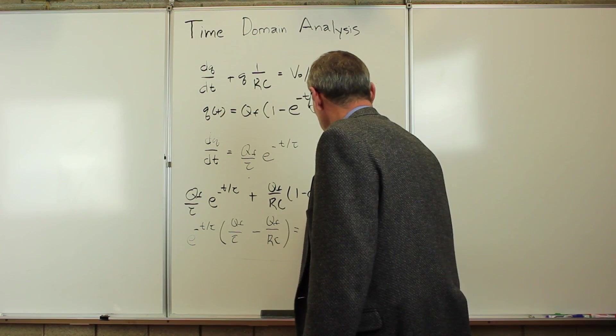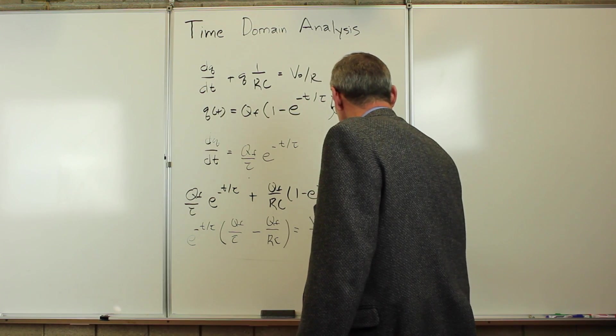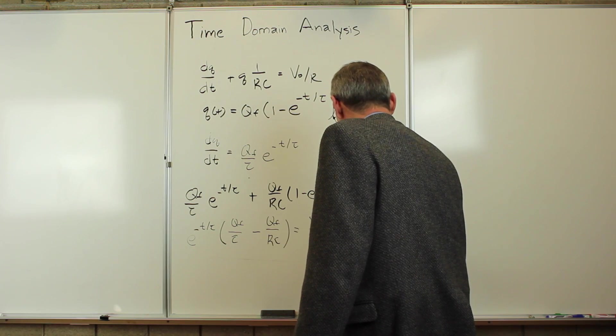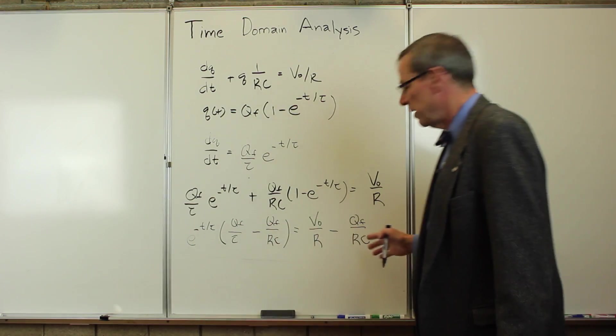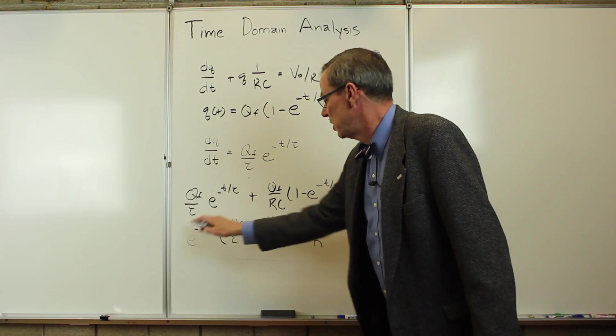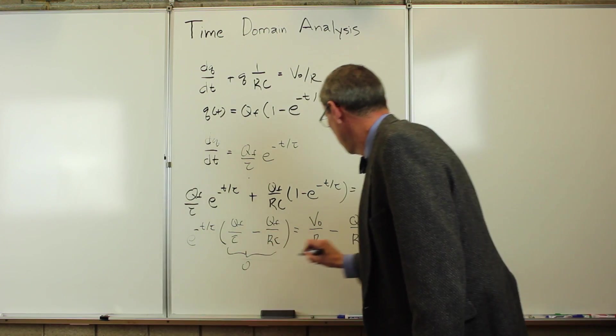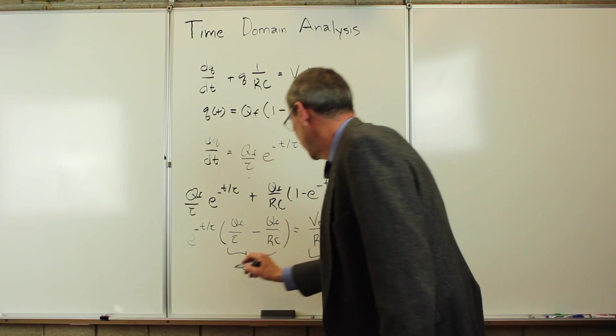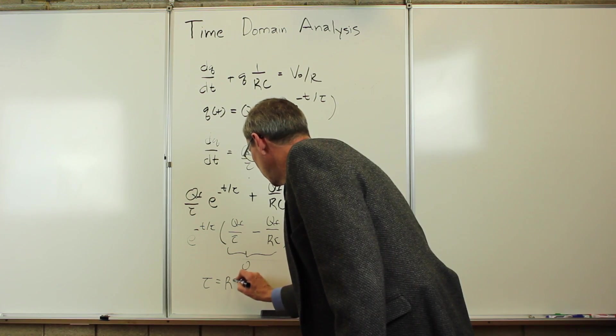And I'll put the other stuff on the other side. It's V0 over R minus Q_final over RC. The only way that this expression could possibly be true for any value of time, because this is changing all the time, is if this is zero and that is zero simultaneously.